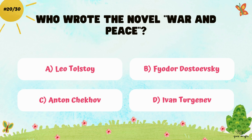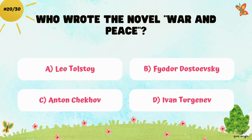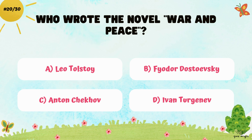Who wrote the novel War and Peace? A. Leo Tolstoy, B. Fyodor Dostoevsky, C. Anton Chekhov, and D. Ivan Turgenev.